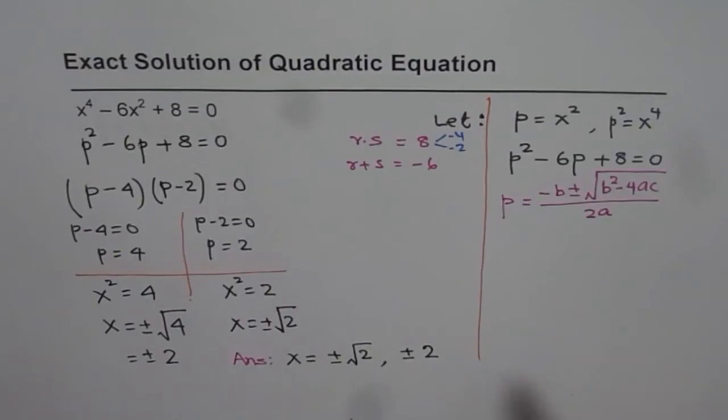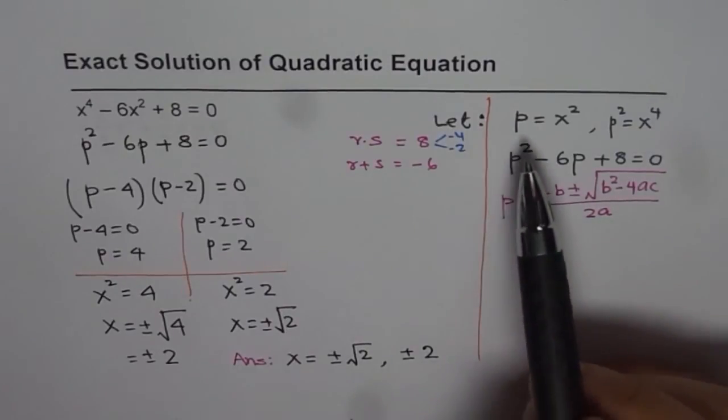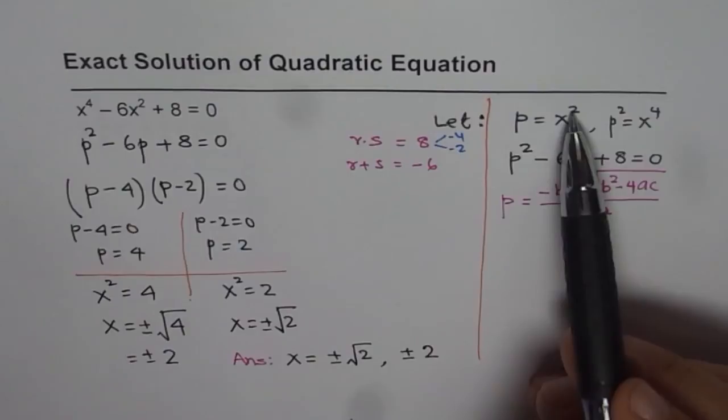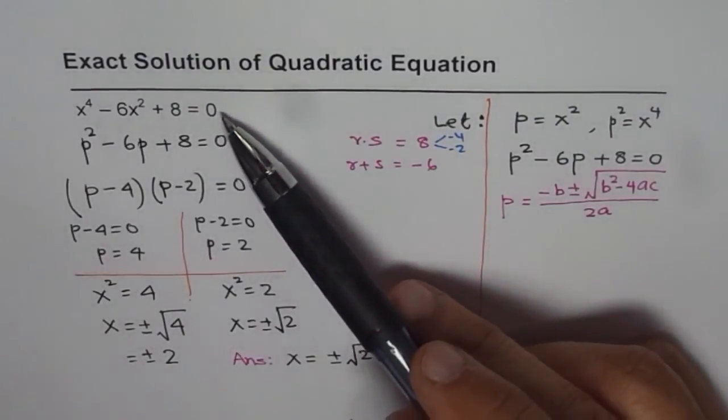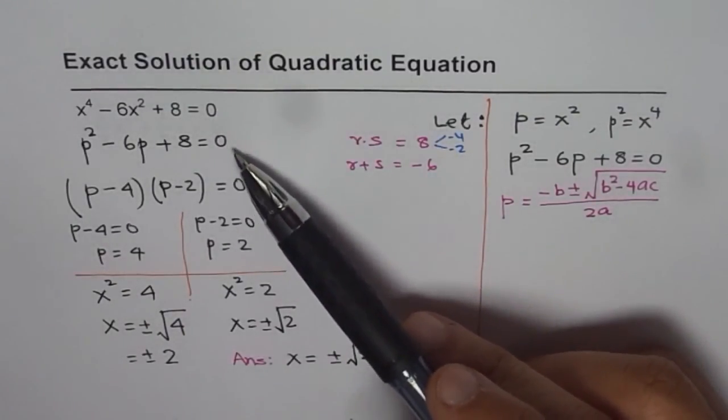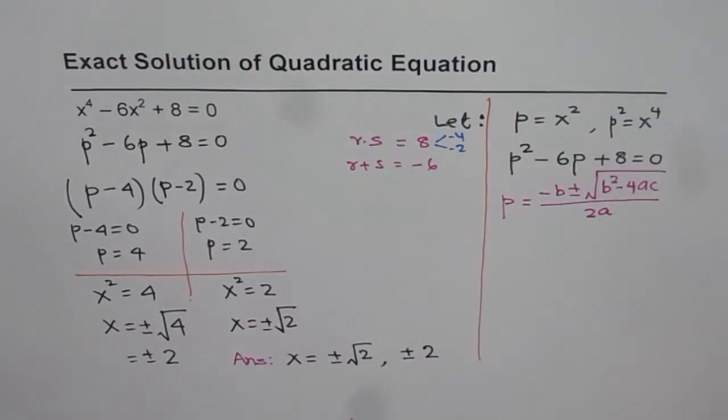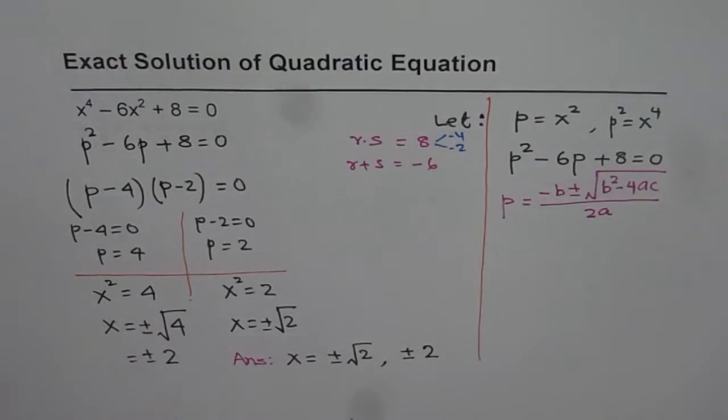That is the way we can solve these questions. The strategy here is to substitute a variable for x squared so that we can write the quartic equation as a quadratic equation. Once we have it in quadratic form, we can apply all the strategies of factoring and formulas to calculate the answer. I hope you appreciate it. Thank you.